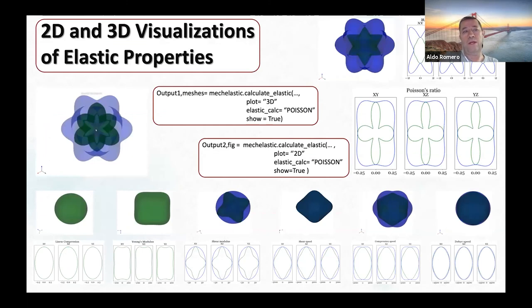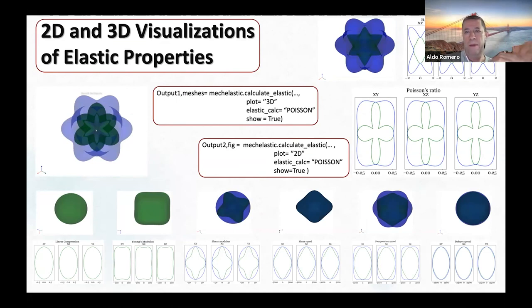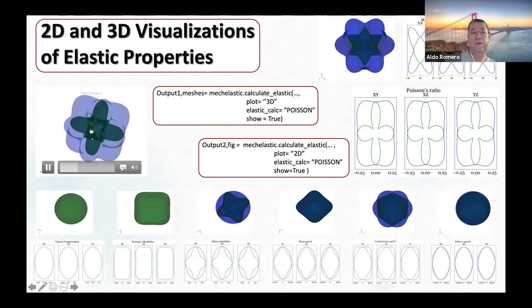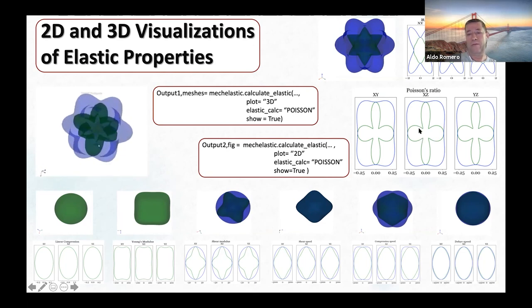Finally, we have two-dimensional and three-dimensional visualization of elastic properties. For those familiar with this type of analysis, there is a web interface called Elate. Here we provide a Python interface: based on your data, the elastic properties are plotted on screen. You can move the visualization with your mouse, see how elastic constants vary with direction, and obtain two-dimensional projections and perform other analyses.